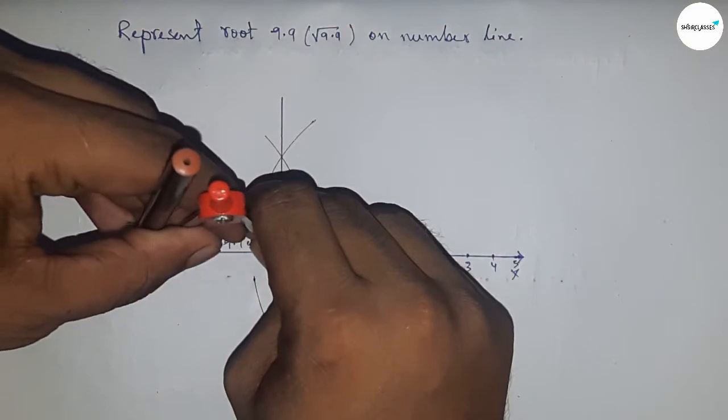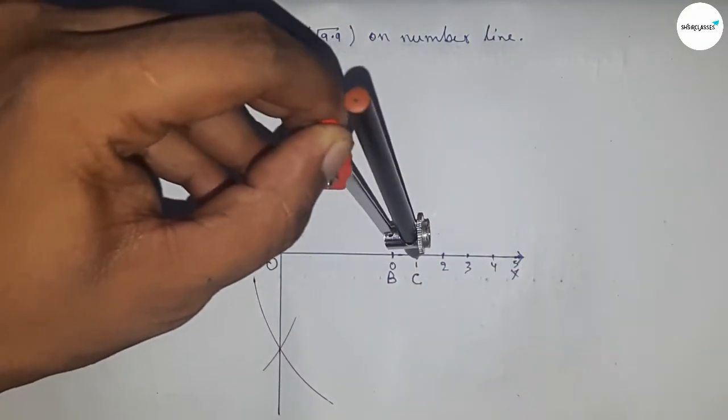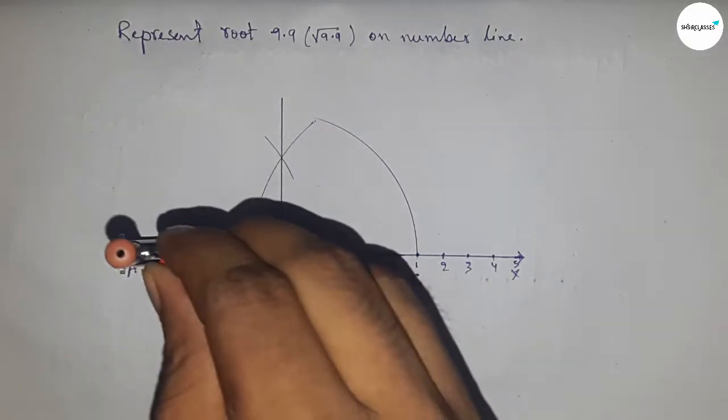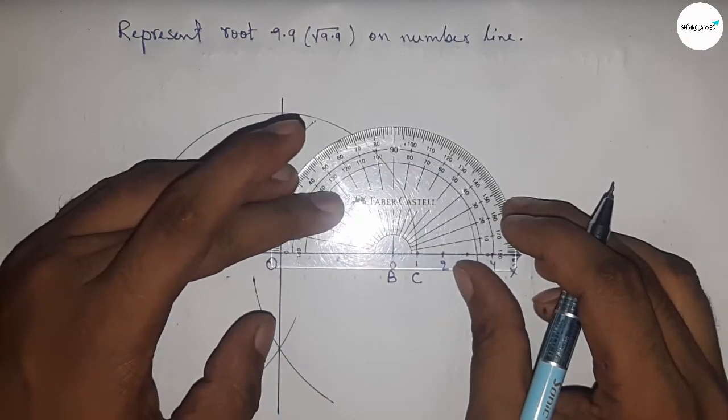Now take the length OA and OC to draw a semicircle. Next, draw 90 degree angle on the point B by using protractor, so this is 90 degree.